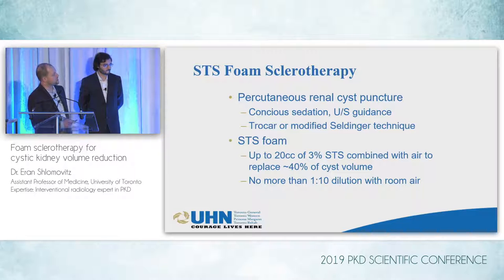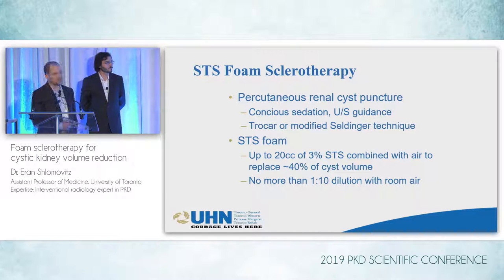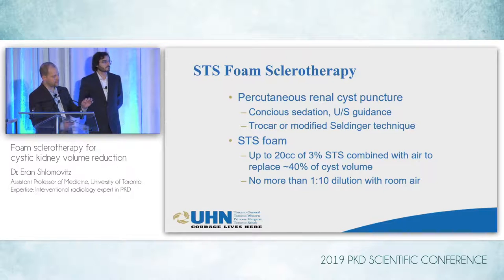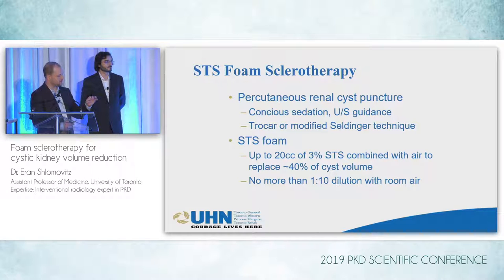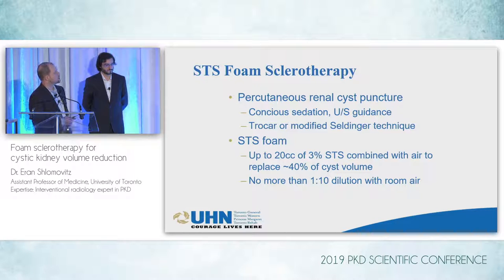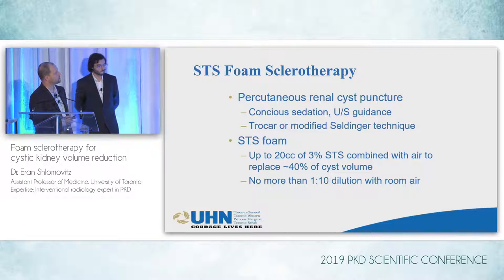We started primarily using a Seldinger technique and then moved more towards a trocar technique. The trocar technique has some advantages in that the opening in the cyst around the catheter itself is a bit tighter, and we think there's less extravasation of the sclerosant to the retroperitoneum. We've seen the rates of post-procedural pain go down. When we have good visibility and are quite happy, we tend to use the trocar technique.